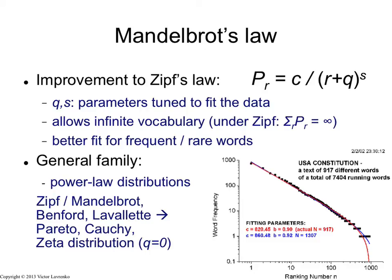The parameters Q and S are meta-parameters. These are numbers that you don't know a priori, but you fit them — you tune them to fit the data that you're trying to fit.